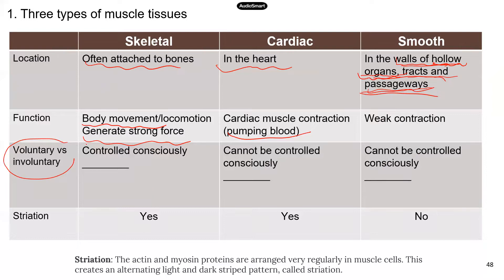Here's the important part: which muscle is voluntary and which is involuntary? Skeletal muscles can be controlled consciously, so they are voluntary. Cardiac muscle cannot be controlled consciously, and same with smooth muscle — so they are both involuntary. We mentioned this in the nervous system, but it's a good refresher because this information is important.